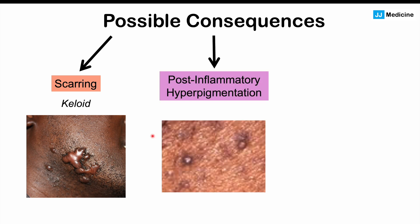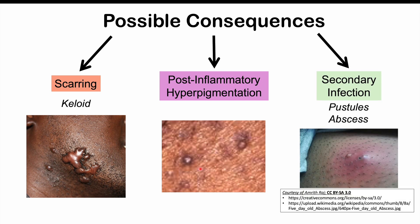Post-inflammatory hyperpigmentation is something that can occur as well. After the skin lesions have been inflamed and healed, there can be some darkening of the skin — the residual lesions appear darker than the surrounding skin. That is what we call post-inflammatory hyperpigmentation, and it can occur in some patients with pseudofolliculitis barbae.